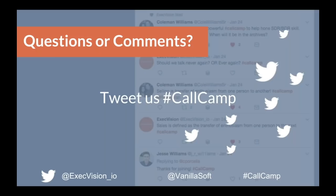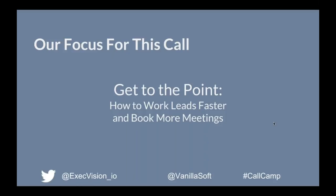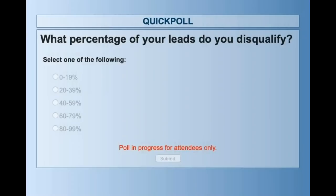We're splashing a poll here. Make sure you tweet us — we have the chat going. Call Camp is very interactive. The question: what percentage of your leads do you disqualify? That's a simplistic question — a lead could be someone who requests a demo, downloads a white paper, someone you met at a trade show, or just everyone who attended. Answer it however you think of it in your organization. What percentage of your leads do you disqualify and walk away from?